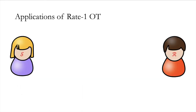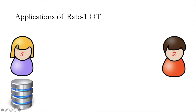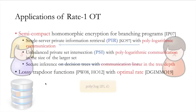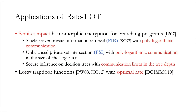This leads to applications where the sender has a large database and the receiver wants to access a particular location without revealing it to the sender. Using Rate-1 OT, we can achieve communication of order D to the power of some function times lambda, where D is the size of the database and lambda is the security parameter — so communication grows only logarithmically in the database size. Concrete applications include single-server private information retrieval (PIR) with polylogarithmic communication, and private set intersection (PSI) with unbalanced set sizes where communication is polylog in the size of the larger set.